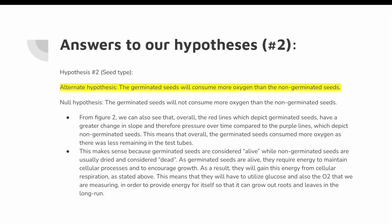For our second hypothesis, the alternate hypothesis is also correct. From figure two, the red lines depicting germinated seeds show a greater change in slope — and therefore pressure — over time compared to the purple lines depicting non-germinated seeds. This means germinated seeds consumed more oxygen overall. This makes sense because germinated seeds are alive, while non-germinated seeds are dried and considered dormant. As living seeds, they require energy to maintain cellular processes and encourage growth, gaining this energy through cellular respiration. They must utilize glucose and O2 to provide energy for growing roots and leaves.